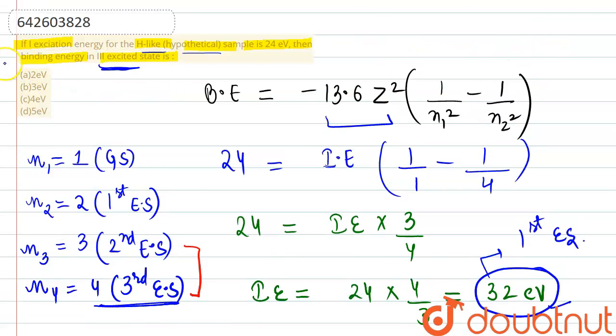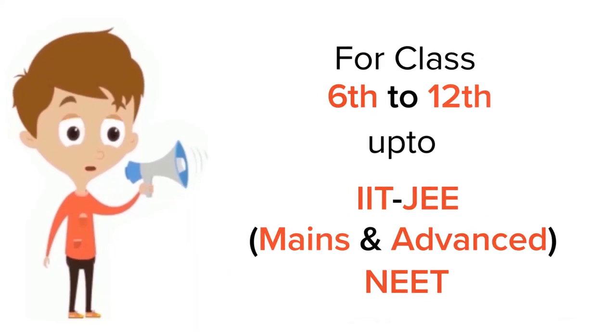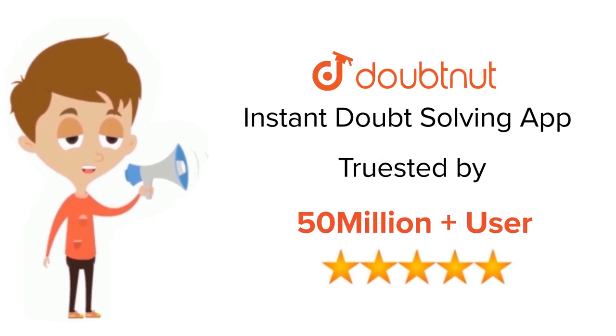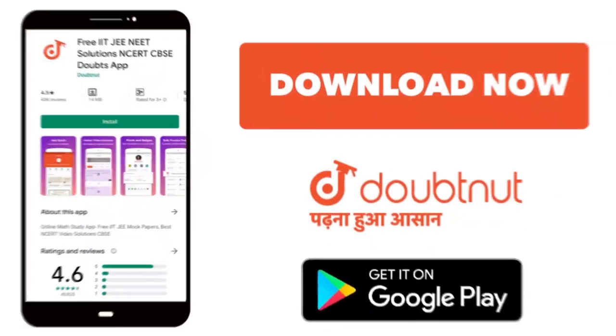So option number A is the correct answer. Thank you. For class 6 to 12, IIT-G and NEET level, trusted by more than 5 crore students. Download Doubtnut app today.